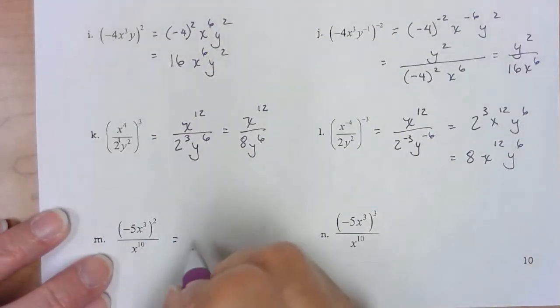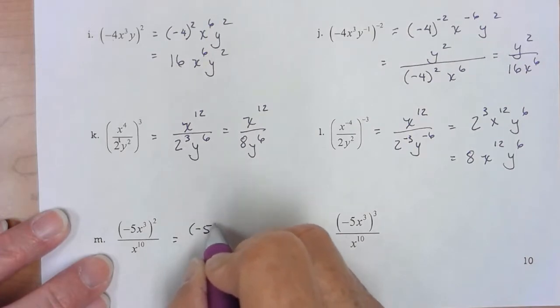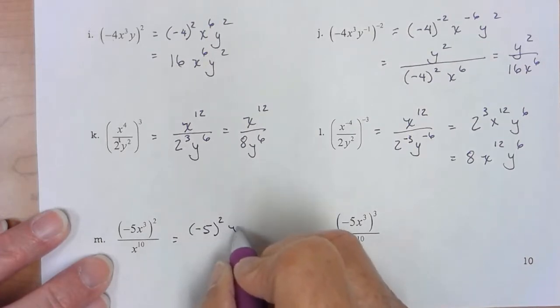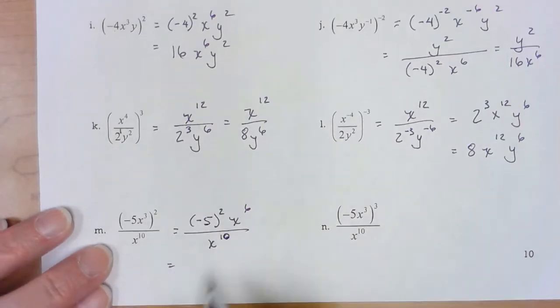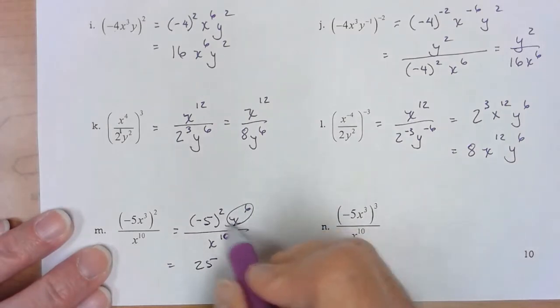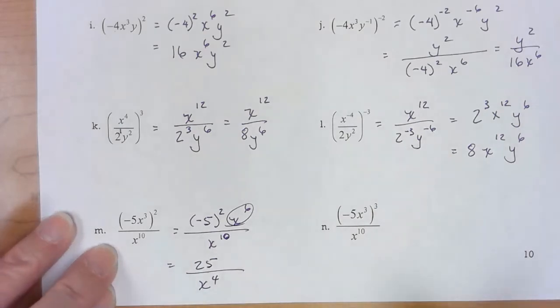Parentheses followed by exponent, so I've got to take care of that first. Negative five squared is going to give me a 25. I've got six here, ten down there. So I'm going to have four left in the denominator. Let me distribute.